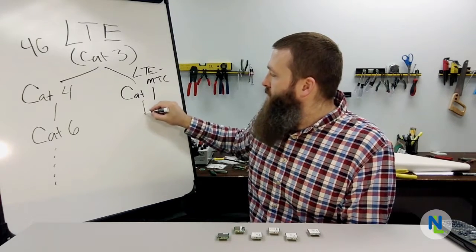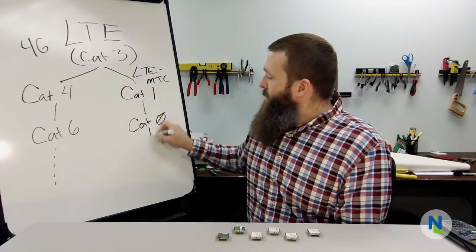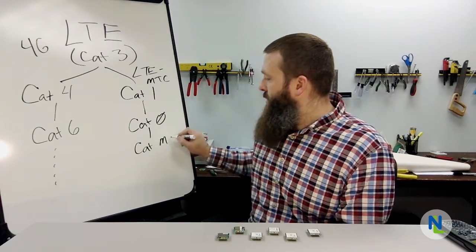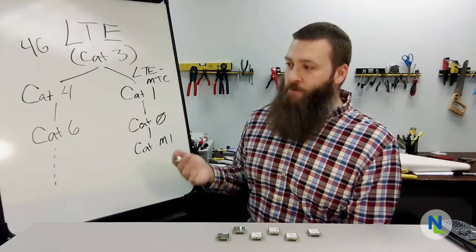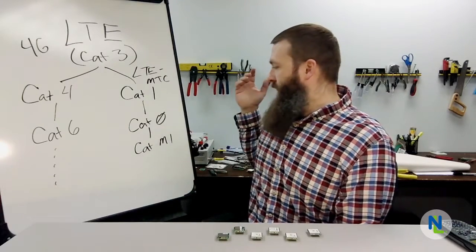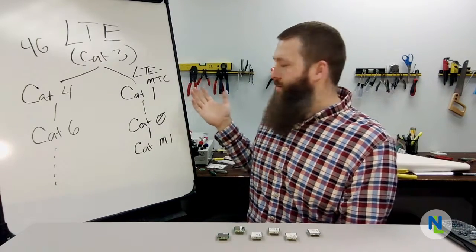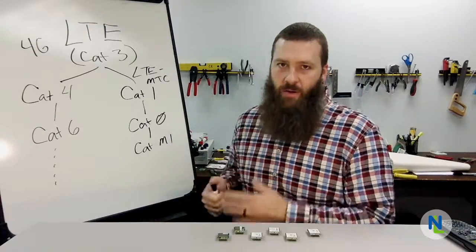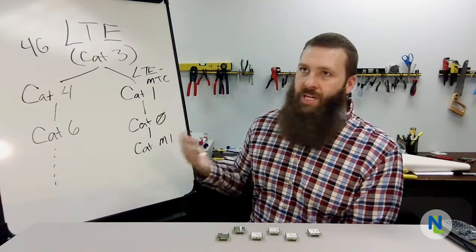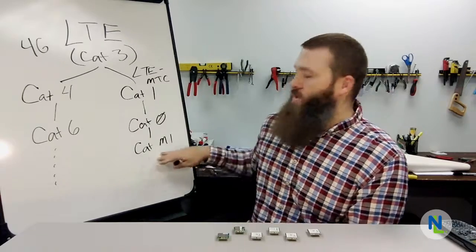Then from there, we went down to Cat 0, which the world pretty much skipped. That was going to be 1 megabit per second. And then from there, we get into Cat M1, which is what we're calling it now. You may have heard it referred to as LTE M. You may have heard it referred to as Category 0 Release 13. There were a lot of different names that were essentially thrown out for what this was going to be. But Cat M1 seems to be what we have decided upon calling this one.